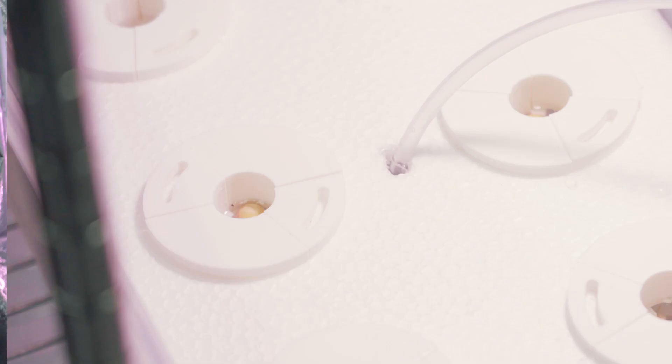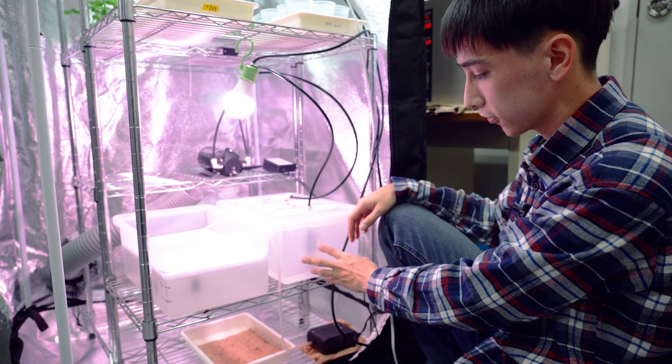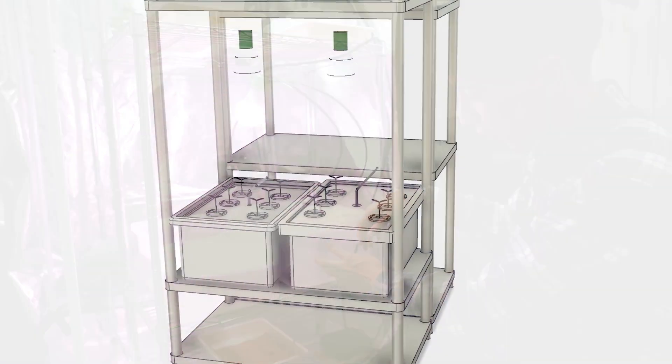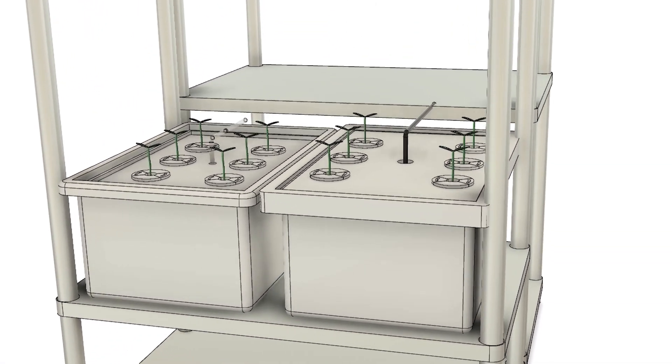For this system, the plants grow in water. For the aeroponic system, they grow in air and periodically water sprays on the roots to keep them moist and growing.